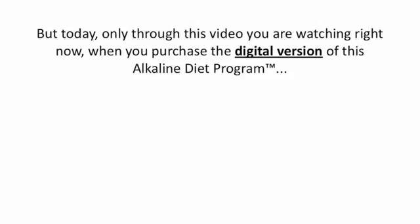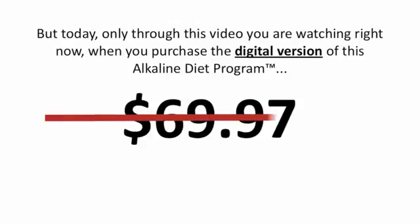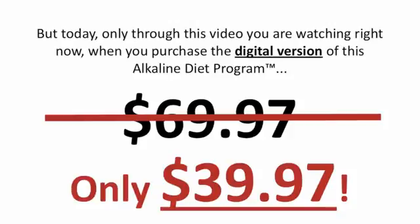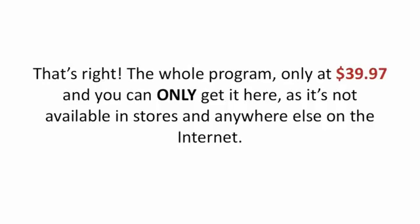The normal price for the program is $69.97. That's without shipping and handling costs. With shipping and handling costs, the cost of the entire package to you would be $89.97. But today, only through this video you're watching right now, if you were to purchase the digital version of the Alkaline Diet Program, I'd like to pass you some incredible savings. Instead of $69.97, you can get this entire package for just $39.97. That's right, the whole program, only at $39.97. And you can only get it here, as it's not available in stores and anywhere else on the internet.